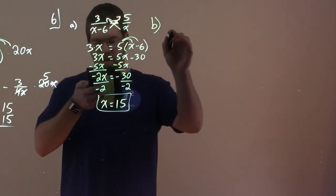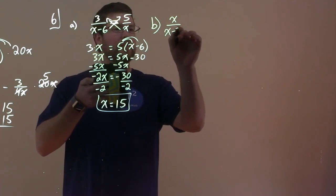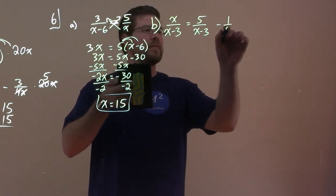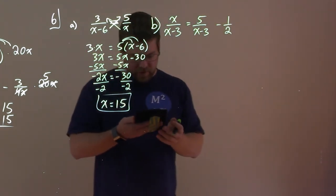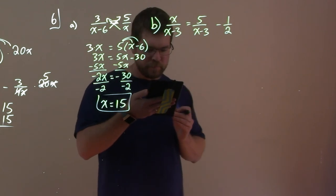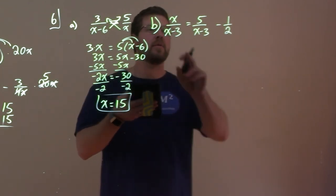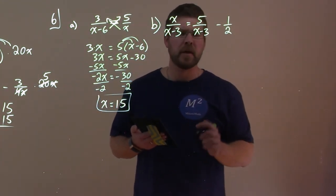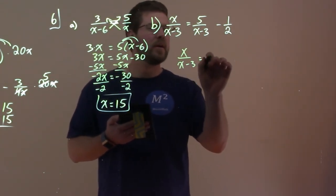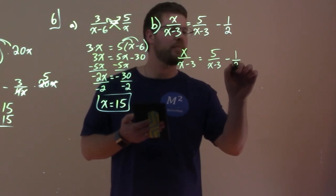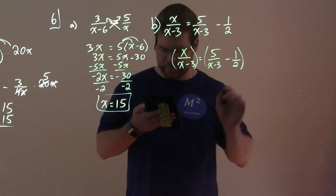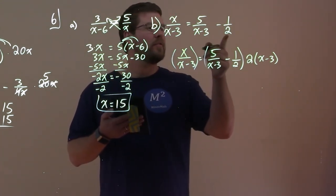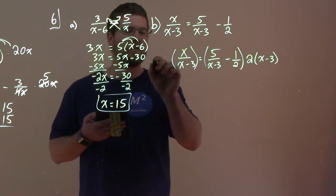Let's do part B: x over x minus 3 equals 5 over x minus 3 minus 1 half. This one's a little tricky. The denominators are x minus 3, x minus 3, and 2, so the LCD is 2 times x minus 3. We separate this out: 2 times x minus 3.